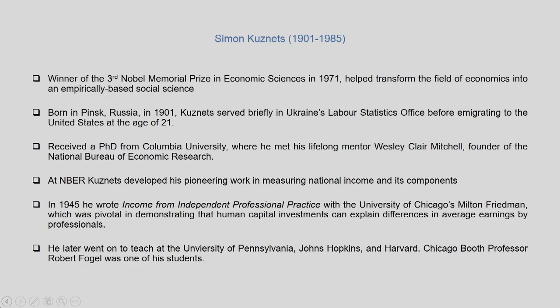He received a PhD from Columbia University and met his lifelong mentor, Professor Wesley Mitchell, the founder of the National Bureau of Economic Research. The NBER was where research on national income accounting was taking place — most concepts of national income accounting were emerging from there, especially during the 1940s and 1950s when new nation-states were emerging. In 1945, along with Milton Friedman, Kuznets wrote a paper on 'Income from Independent Professional Practice,' demonstrating how human capital investments explain differences in average earnings by professionals.